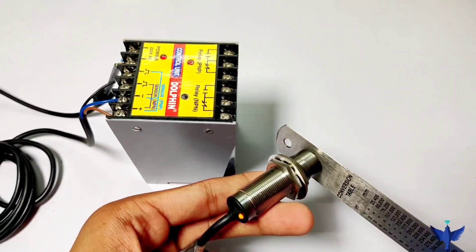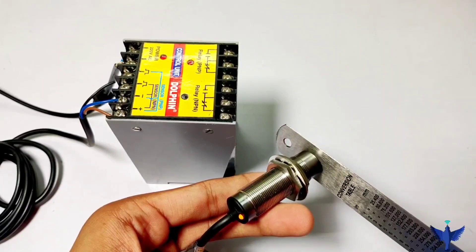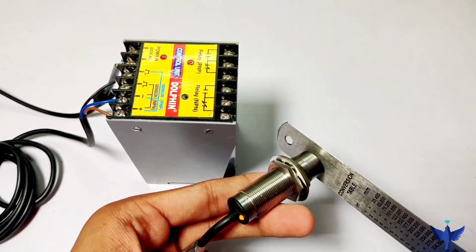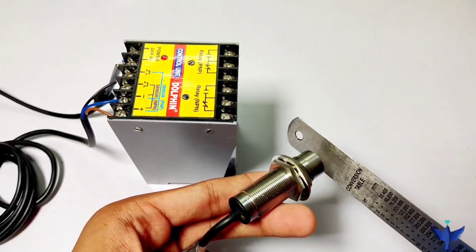We can see the LED indication at the back of the sensor and in the control unit as well. It triggers the PNP relay.